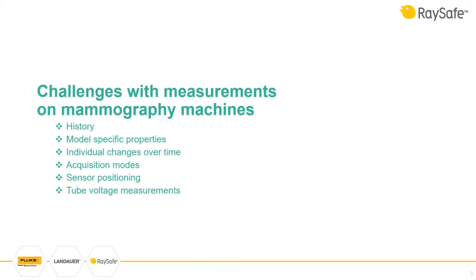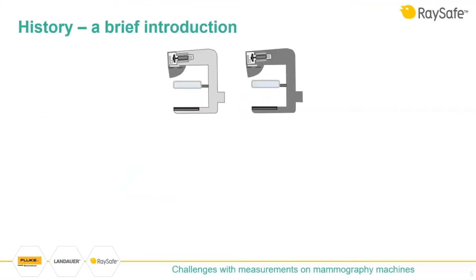Mammography machines, compared to other diagnostic imaging machines, face some additional challenges with non-invasive measurements. We will look through some aspects of this before looking closer at the RaySafe FX2. For many years, analog mammography was more or less the same — machines were using a molybdenum target on the X-ray tube and running at 20 to 35 kV.